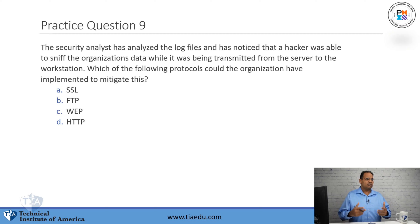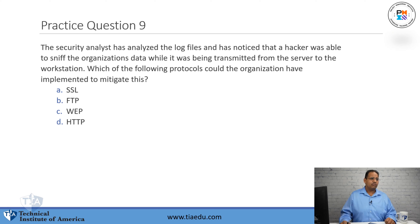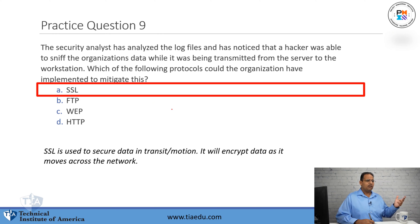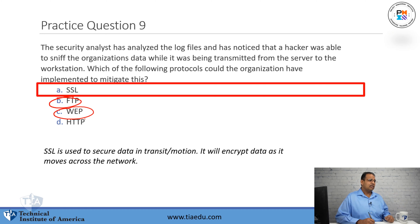Question number nine: a security analyst has analyzed the log files and noticed that a hacker was able to sniff the organization's data while it was being transmitted from the server to the workstation. Which of the following protocols could the organization have implemented to mitigate this? A, SSL. B, FTP. C, WEP. D, HTTP. The answer is SSL, which encrypts data. SSL encapsulates protocols like HTTP to create HTTPS, or FTP to create FTPS. FTP is plain text, WEP is crackable, and HTTP is plain text.